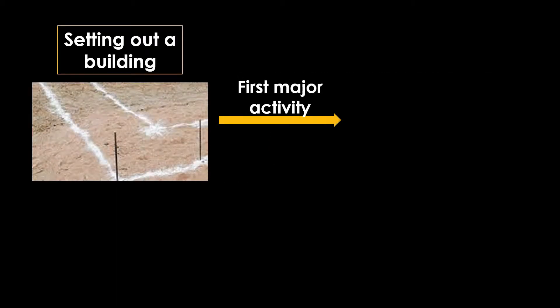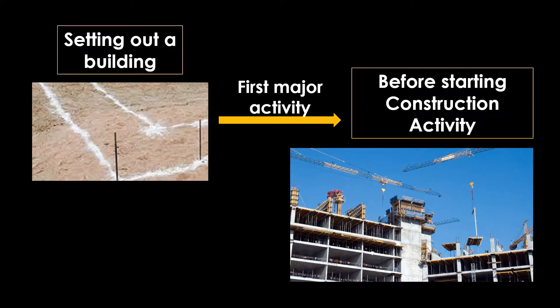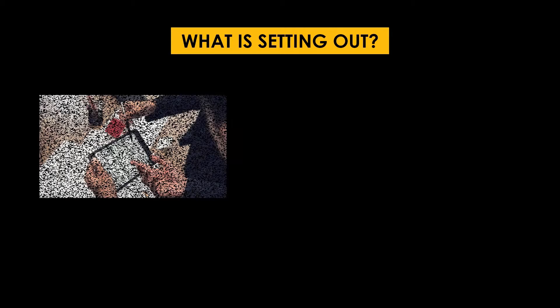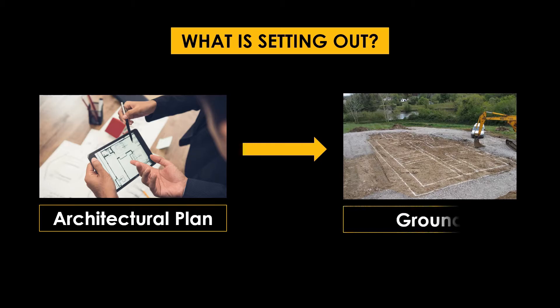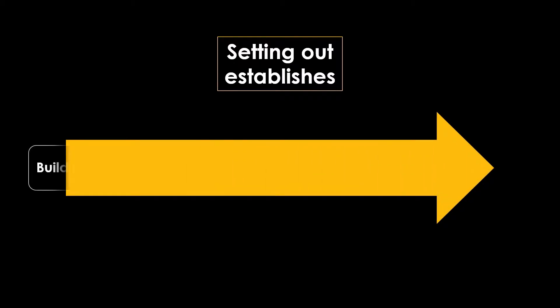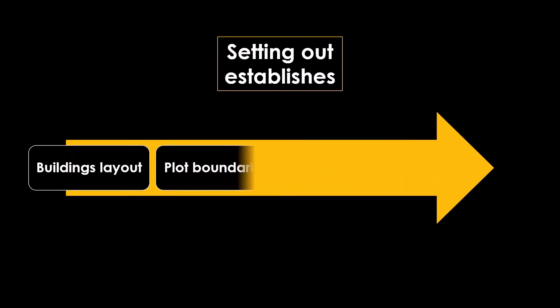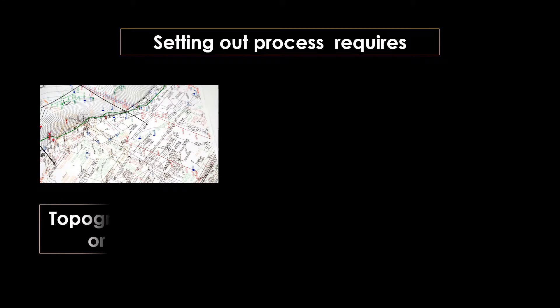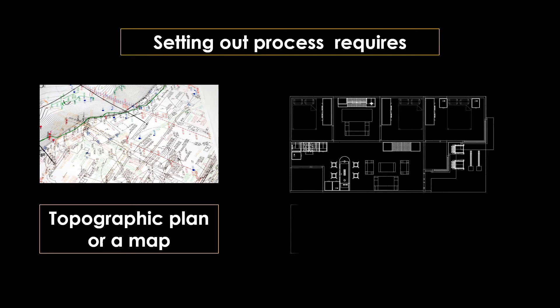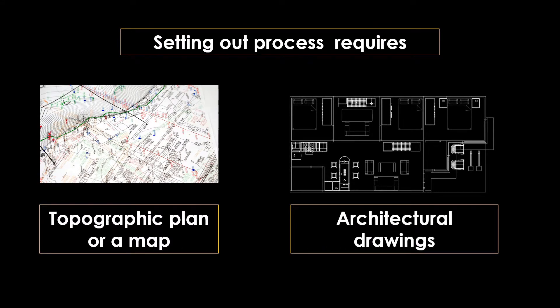Setting out a building or a structure is the first major activity before commencing any construction. Setting out is the process of transferring the architectural plan or proposals onto the ground. Setting out establishes the building layout, plot boundaries, column locations, temporary and permanent access, etc. The setting out process requires a topographic plan or a map and an architectural drawing.